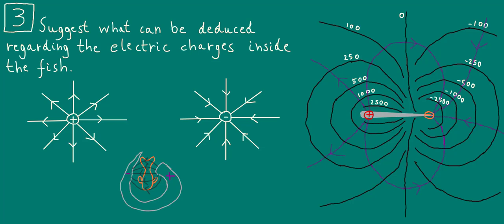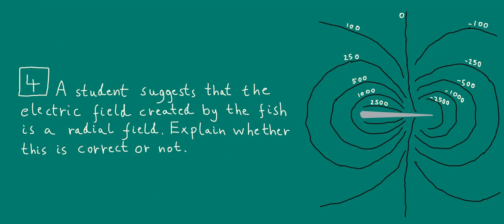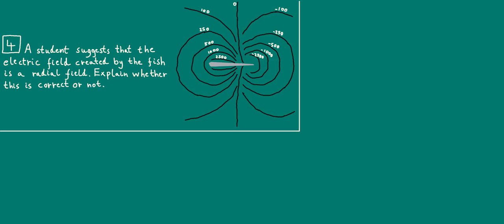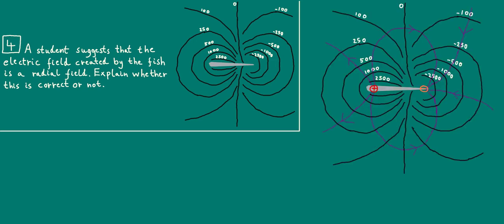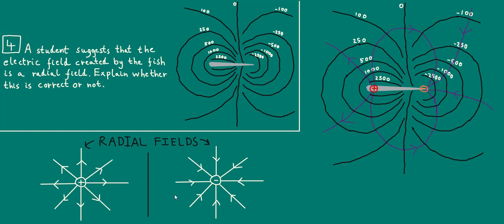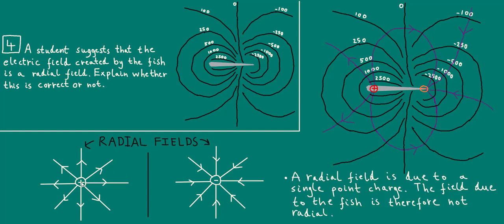Alright, so let's now move on to the fourth and final question in this case study. A student suggests that the electric field created by the fish is a radial field. Explain whether this is correct or not. Okay, welcome back. To start, let's bring back in the field lines that we drew already from question 3. It turns out that in question 3 we already saw some radial fields, although we didn't actually call them radial fields. The fields created by a single positive point charge or a single negative point charge are radial fields. Comparing those field patterns to the electric field due to the fish, it's absolutely clear that the electric field due to the fish is not a radial field. A radial field is due to a single point charge, and the field due to the fish is not radial because there is positive charge at the left end and negative charge at the right end.